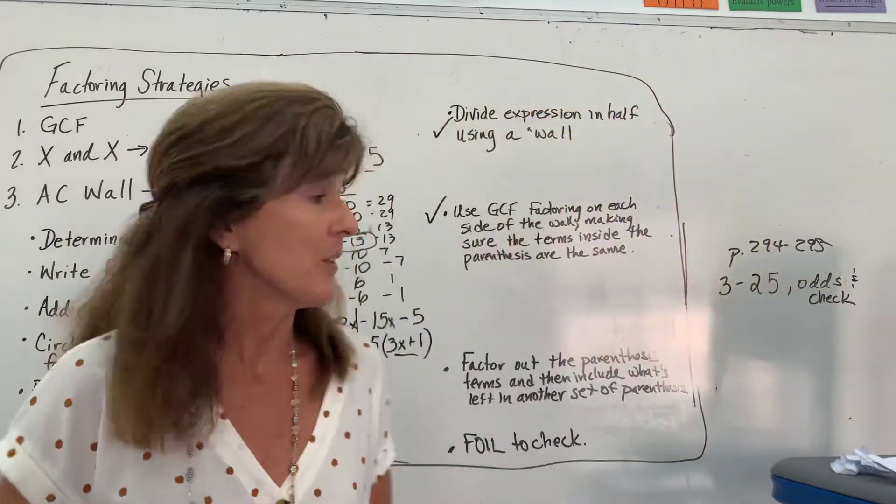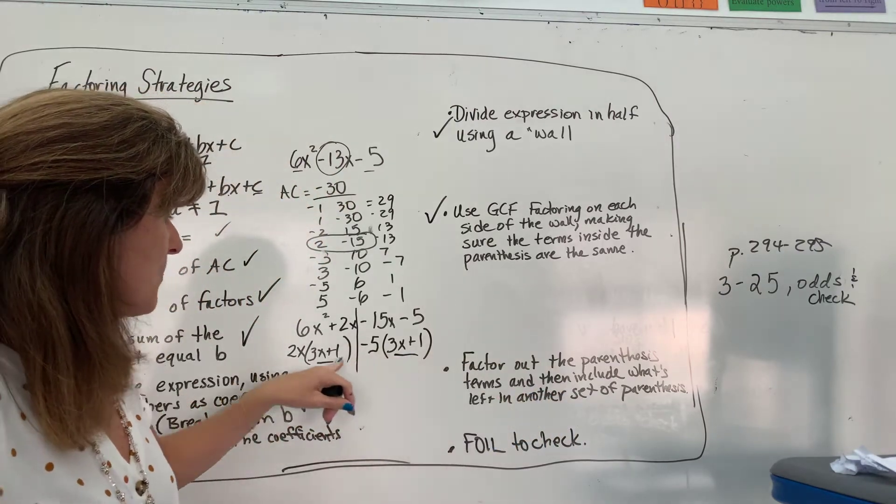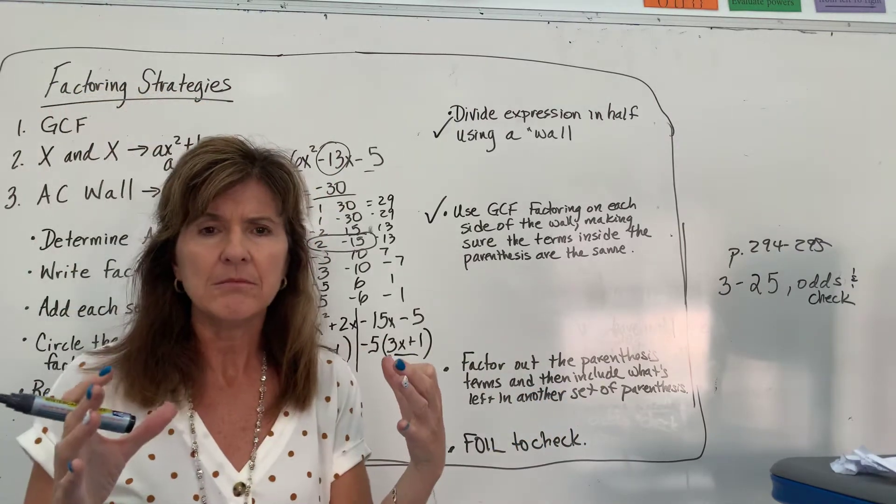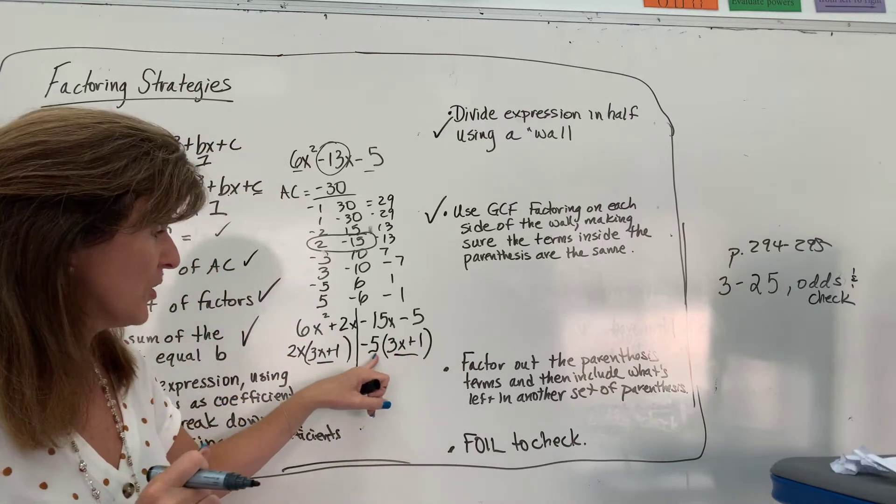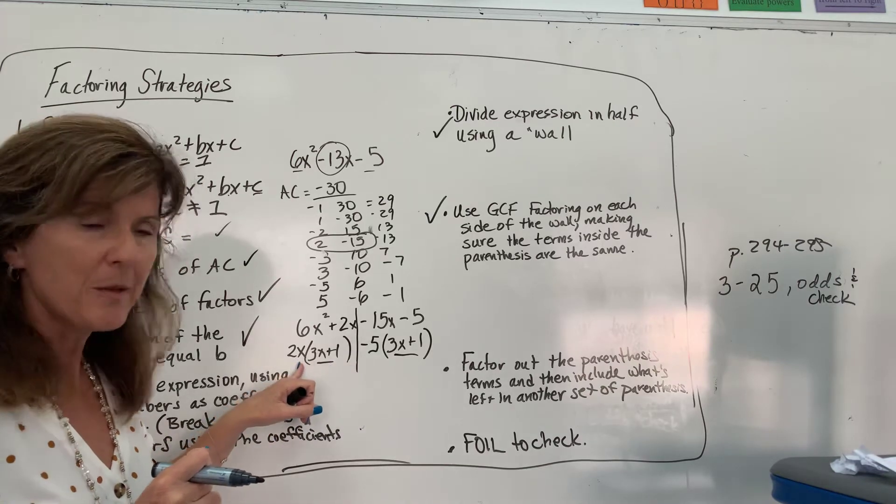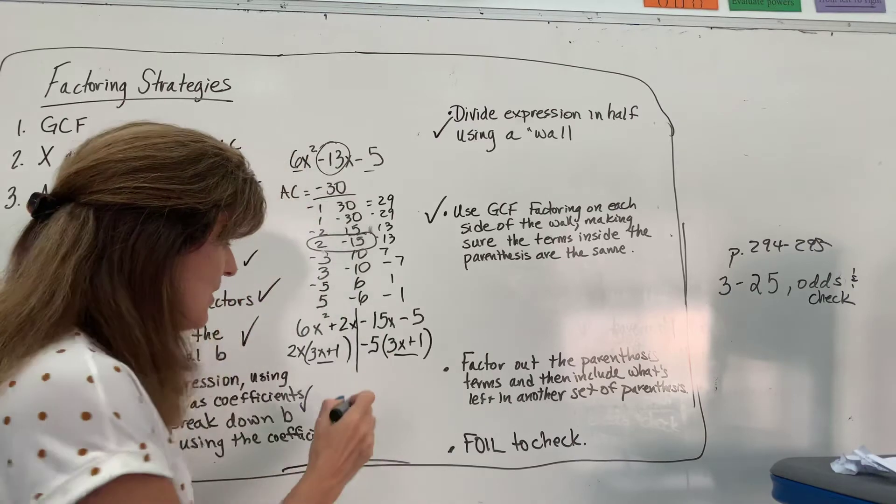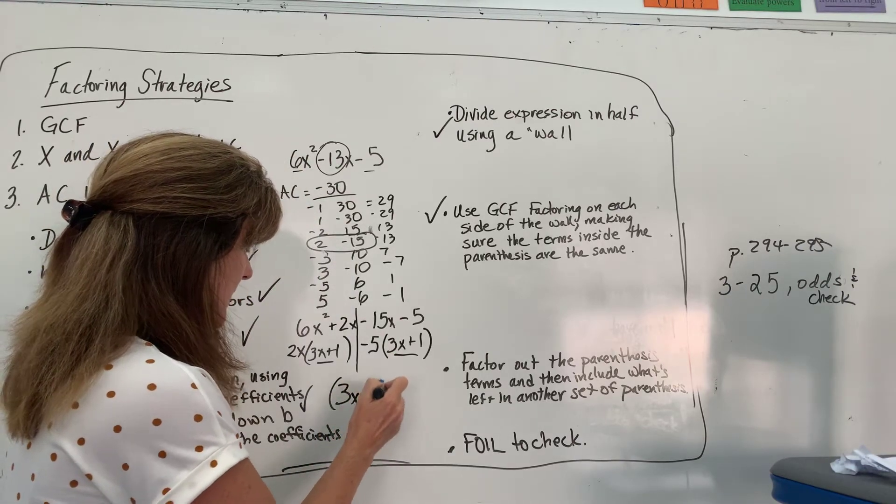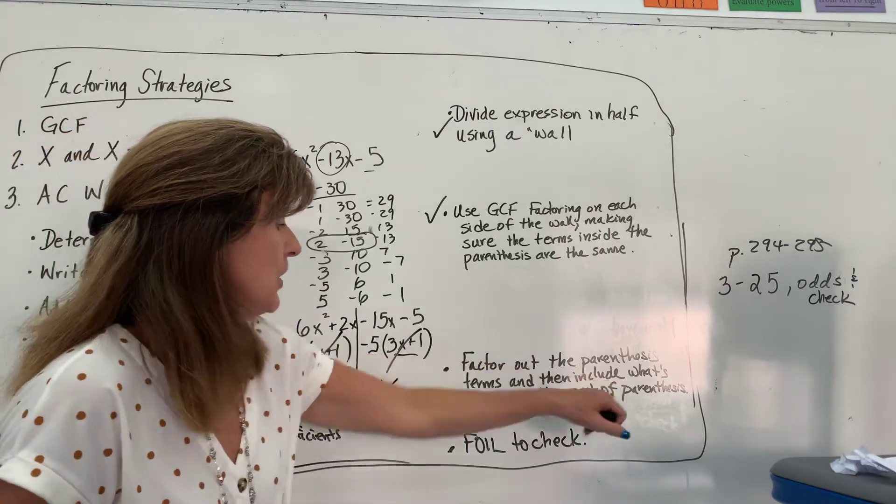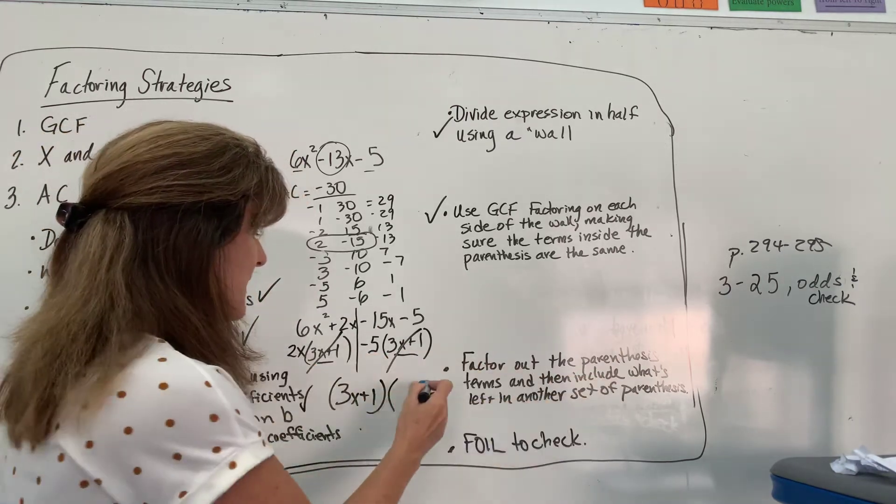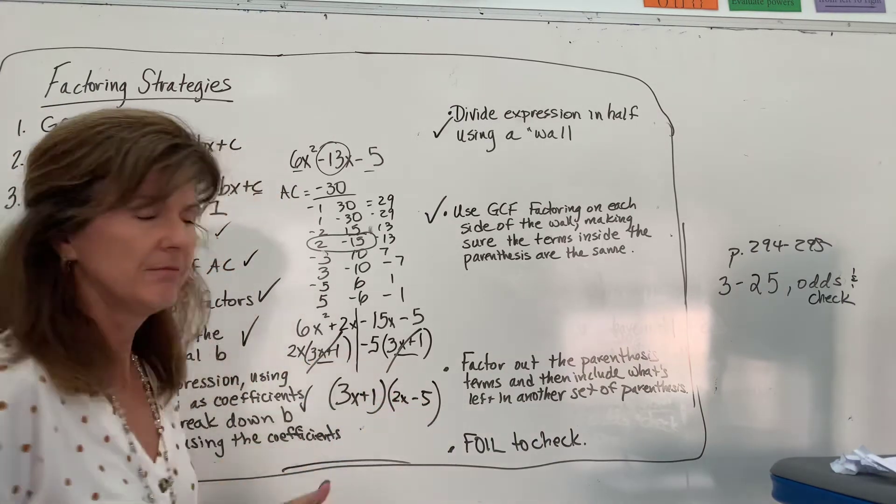So, then, we do this. All right. Factor out the parentheses terms. 3x plus one, 3x plus one. That is simply, that's just a factor of each of these terms. This 3x plus one is multiplied by negative five. This 3x plus one is multiplied by 2x. You can kind of see that they're just factors. So, I'm going to take the 3x plus one out. Take that one, cross out if you want to. And then include what's left in another set of parentheses. Over here, I have 2x minus five. Perfect.